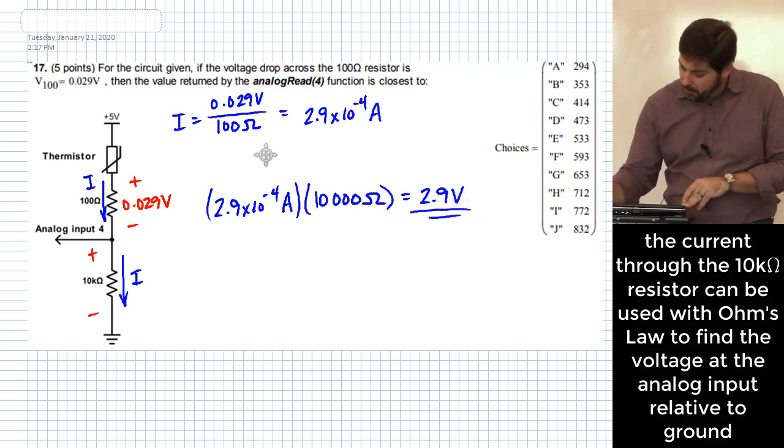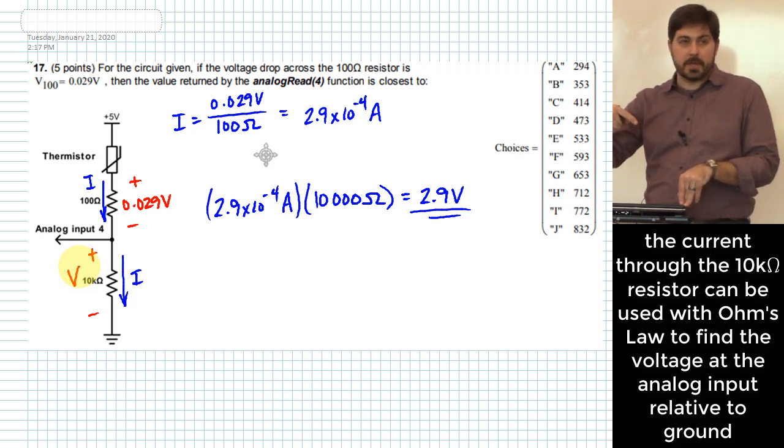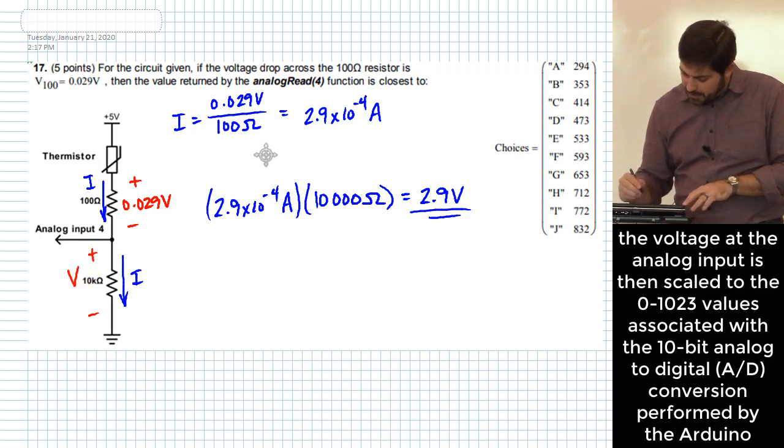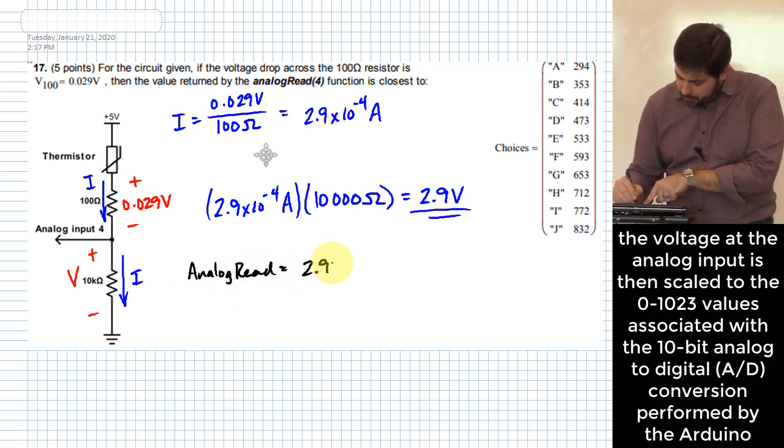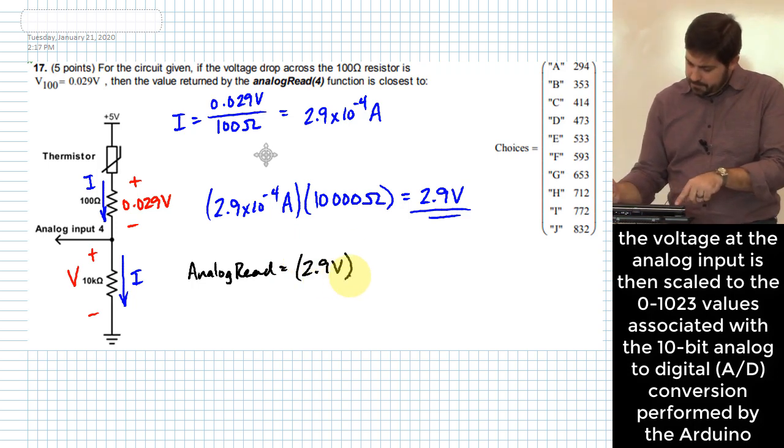And that is this voltage value that we have right here, which is the voltage that the analog input pin is going to see, right? So that's the voltage that we use to base our analog read is going to be that 2.9 volts, right? Times what?